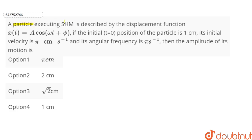A particle executing SHM is described by the displacement function x(t) = A cos(ωt + φ). If the initial position of the particle is 1 cm, its initial velocity is π cm/s, and its angular frequency is π/s,